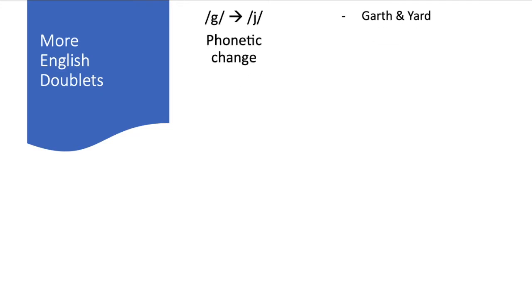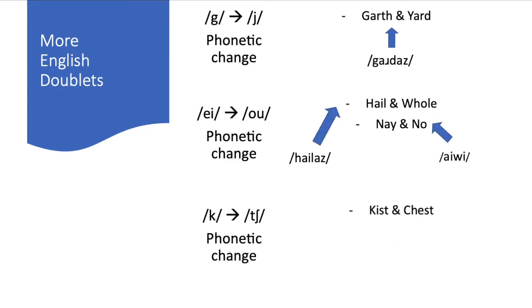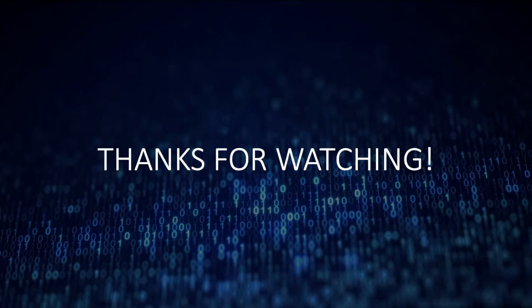Here are some English doublet examples. There are phonetic changes that affected 'garth' and 'yard' — they have the same root. Another change affected 'hale,' 'whole,' 'nay,' and 'no,' which also share the same root. And another affected 'chest' and 'cist,' again sharing the same root. There is much more detail to go into and many more languages to discover doublets in, but that would just go on for too long. Thanks for watching — hope you learned something new today.